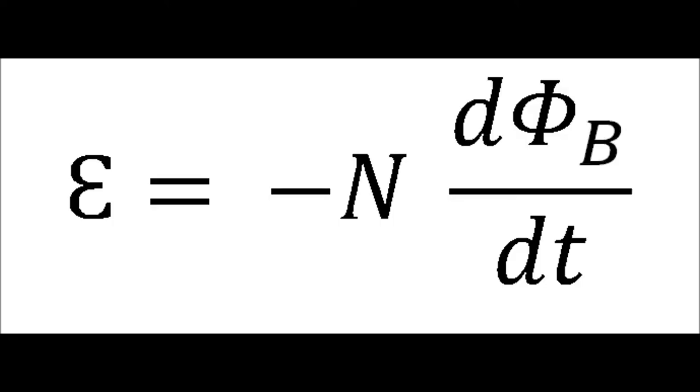Any change in the magnetic flux of a coil of wire will cause a voltage, or EMF, to be induced in the coil. No matter how the change happens, a voltage will be produced.